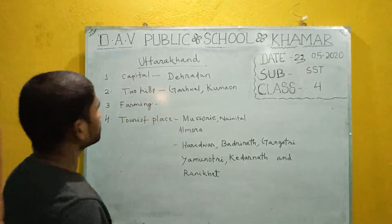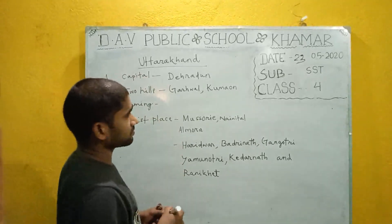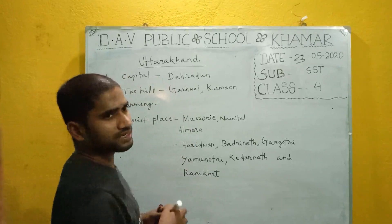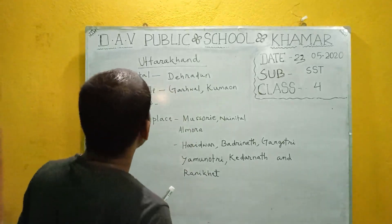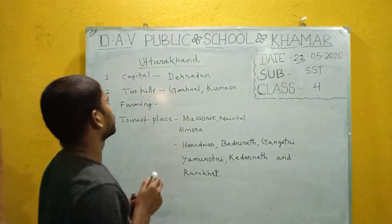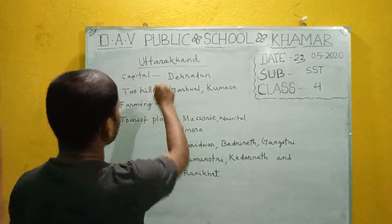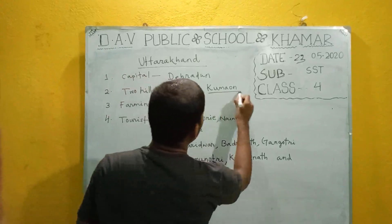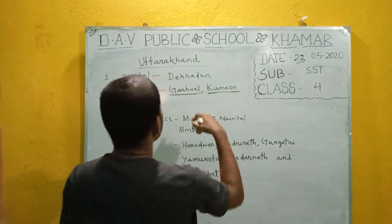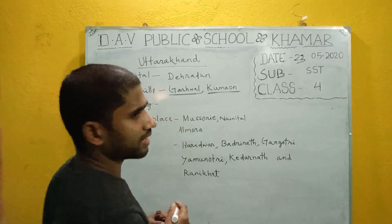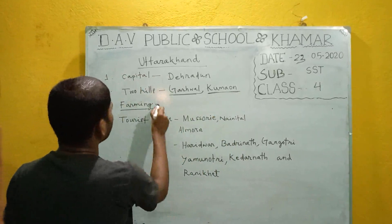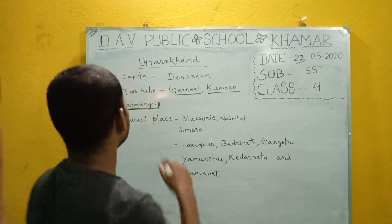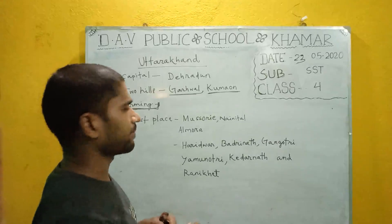Next comes Uttarakhand. It is also an Indian state situated to the south of Himachal Pradesh and Jammu and Kashmir. The capital city of Uttarakhand is Dehradun. It includes two hills — Garhwal and Kumaon. Farming is the main source of economic activities of the people of Uttarakhand.